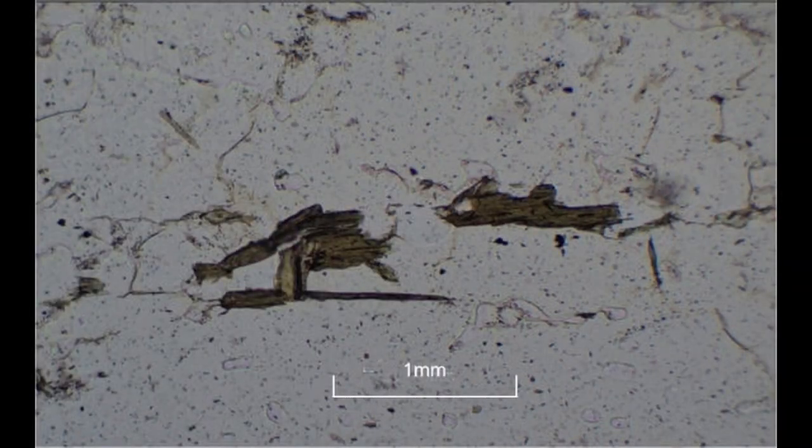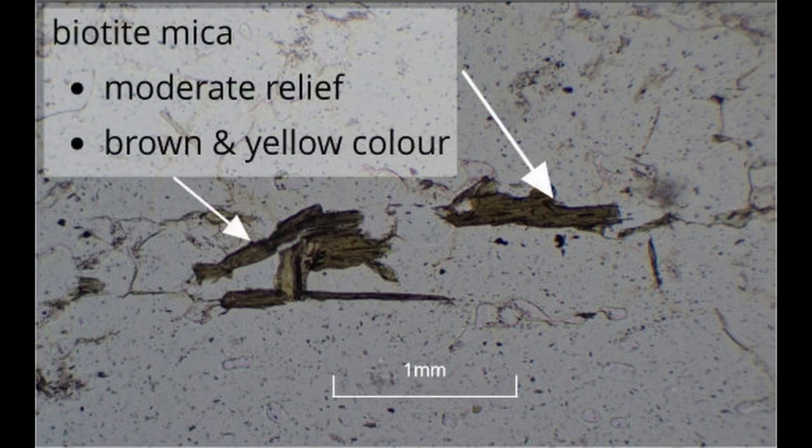There are smaller amounts of biotite mica in the rock. Under plain polarised light, this mineral has moderate relief, is brown and yellow in colour and shows one cleavage.